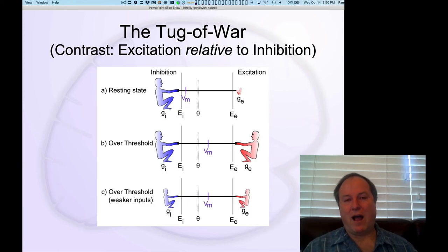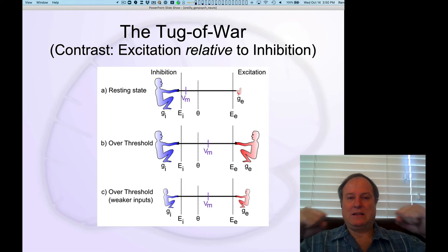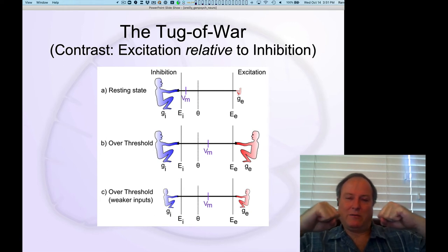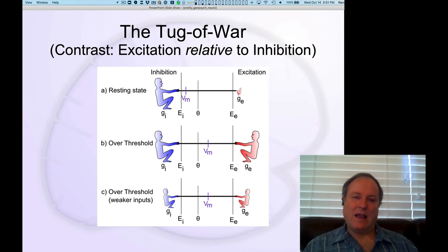And the key point of all of that is that because these two are kind of in this pitch battle, this tug of war state, the only thing that matters about where the neuron goes in terms of this membrane potential is the relative strength of inhibition compared to excitation. So in the typical resting state of the cell, you have only inhibition. You don't have any excitation.